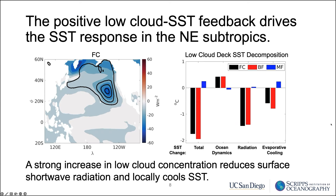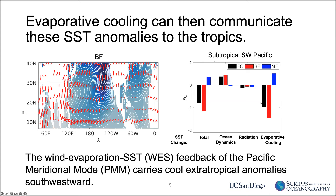Those locally cooled SSTs can be communicated to the tropics by evaporative cooling. The large-scale anticyclonic wind pushes SSTs in a clockwise pattern — the wind-evaporation-SST (WES) feedback, the primary driver of the Pacific meridional mode — which carries cool extratropical anomalies southwestward. The SST decomposition shows the total response in the subtropical southwestern Pacific is largely driven by evaporative cooling, primarily wind speed effects. These two buoyancy-forced positive feedbacks act as a coupled system in the subtropical Pacific, capturable by slab ocean model simulations.